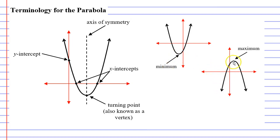When our graph is facing downwards, like here on the right, we have what's called a maximum. The graph doesn't exist anywhere above the maximum.